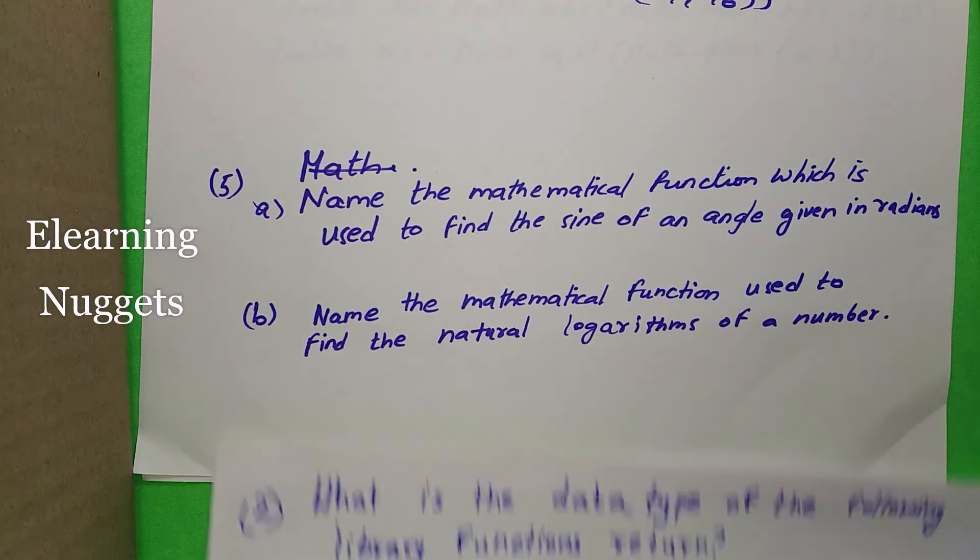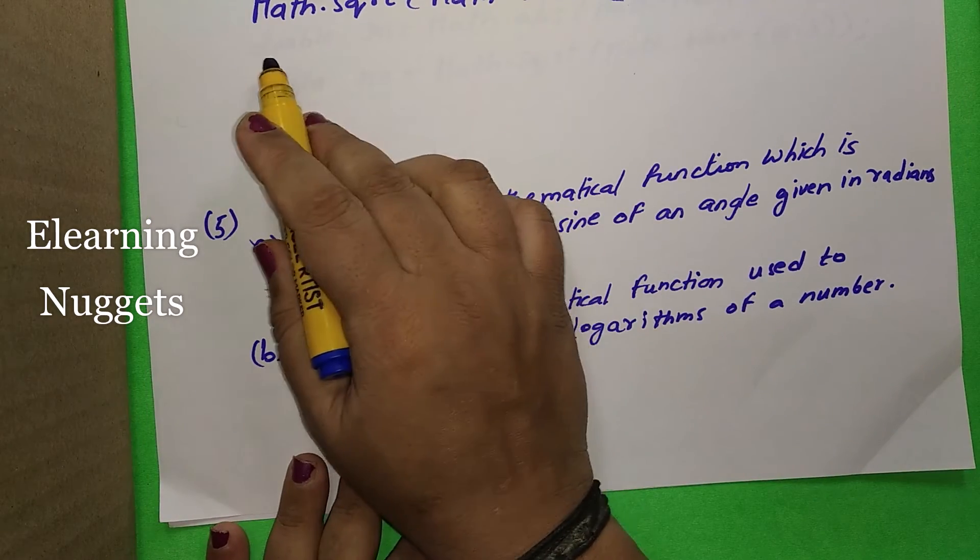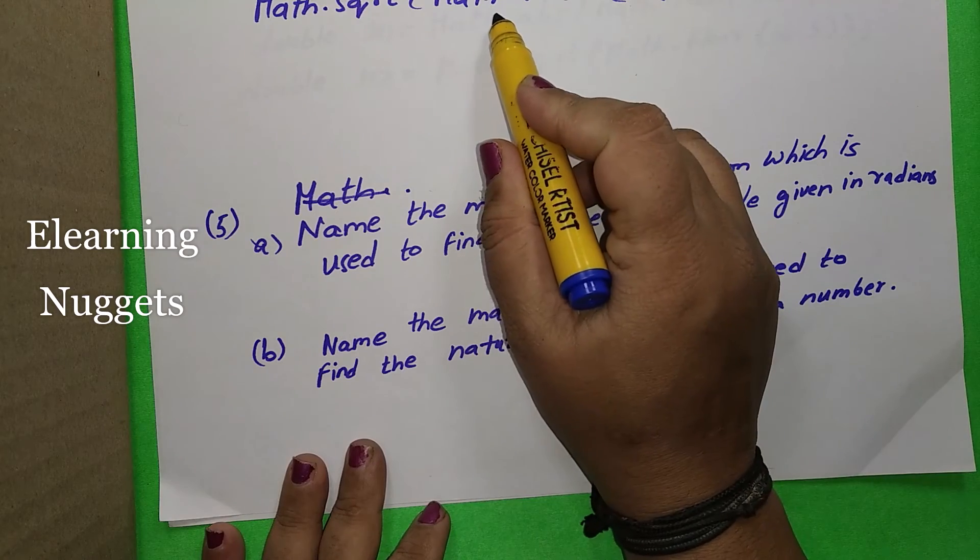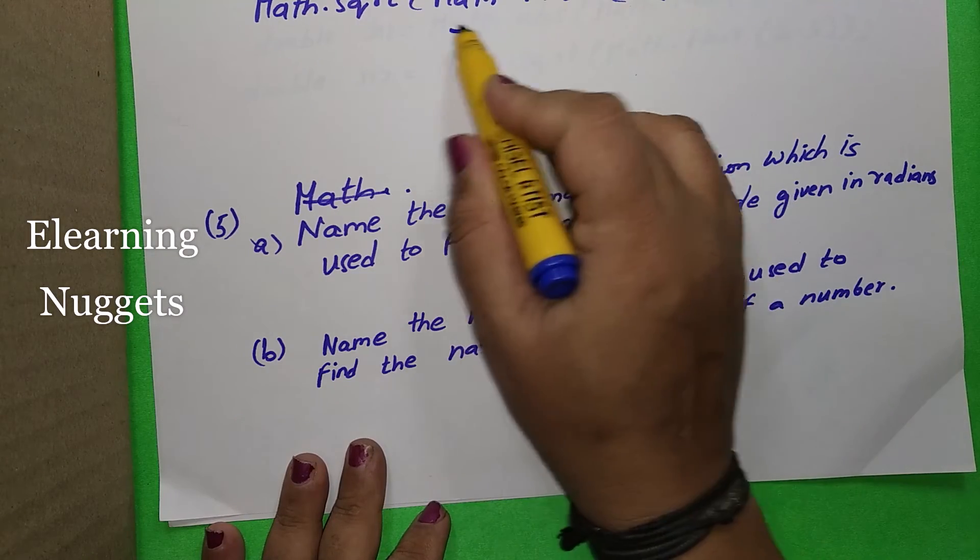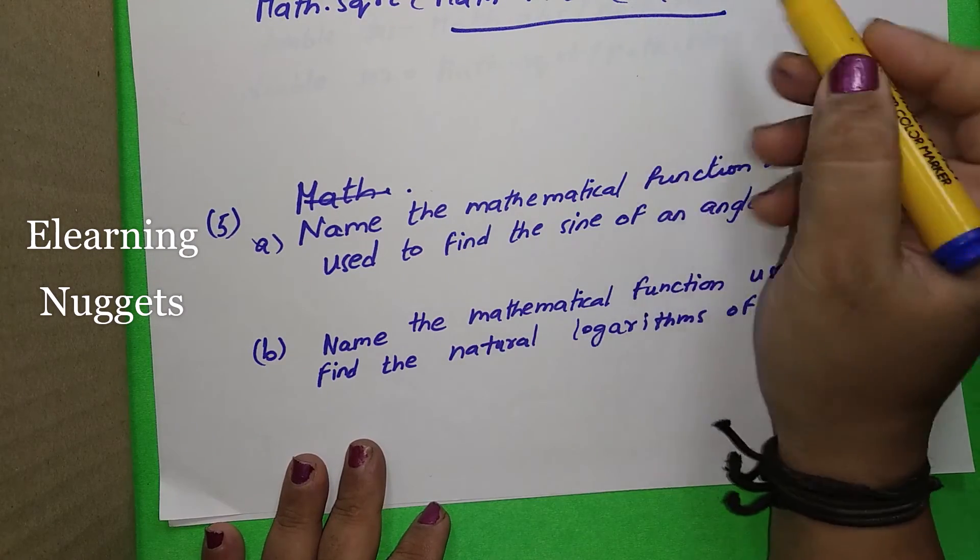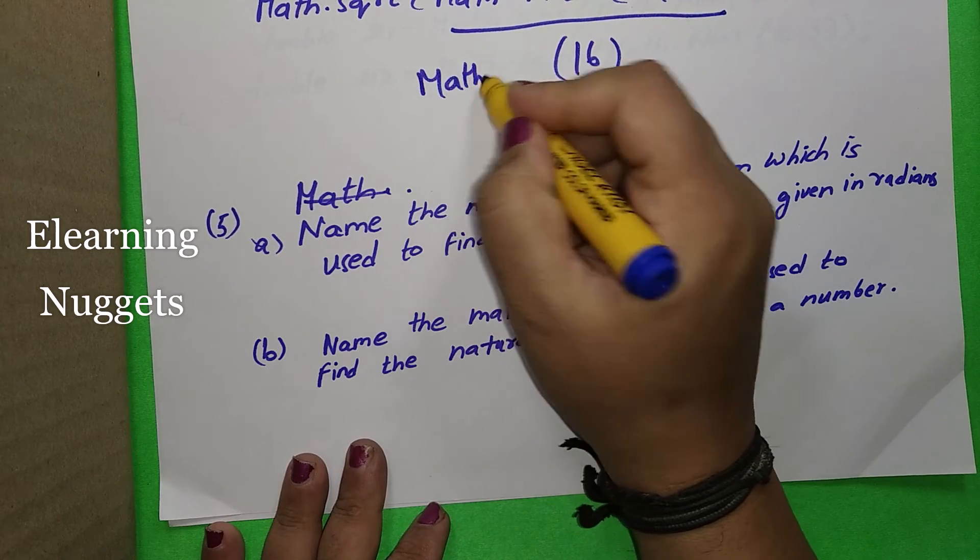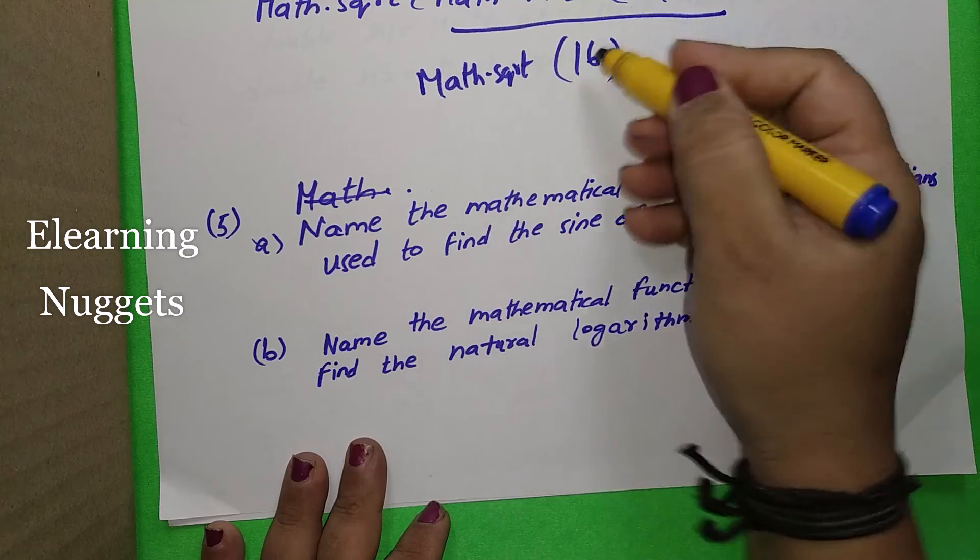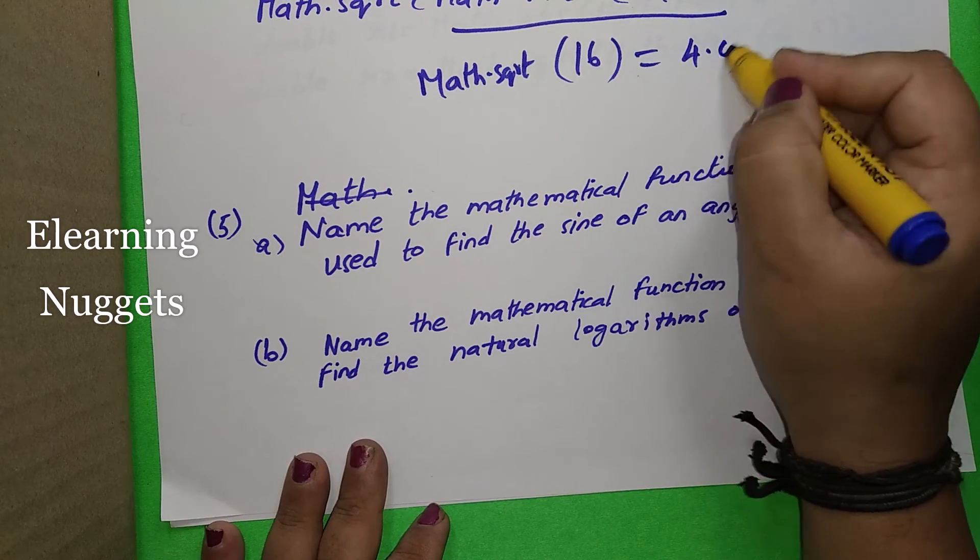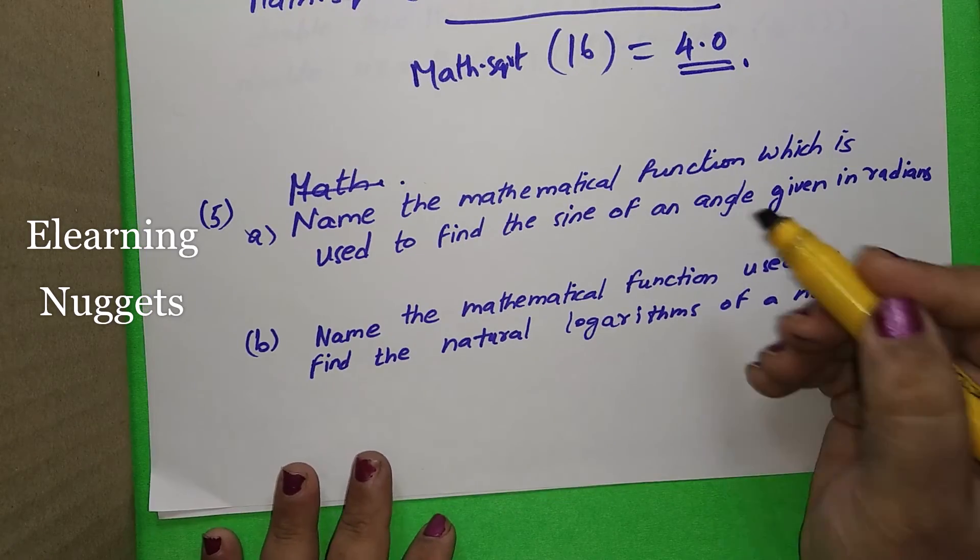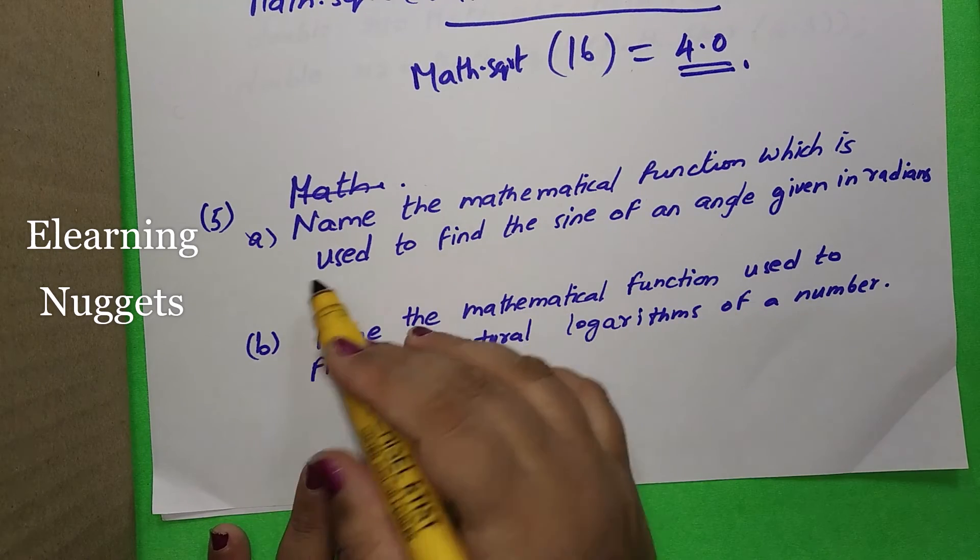Got one more. Two more here. This is comparatively easy. We can do it directly. First, we have to do the inner one. We have to do this. What is the maximum between 9 and 16? It is 16. And what is math dot square root of 16? Square root of 16 is 4. Square root returns a double value. So, you write 4.0.